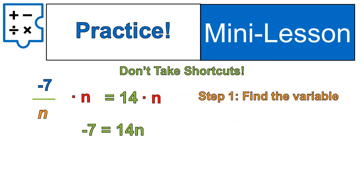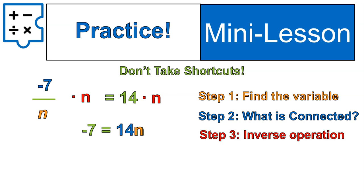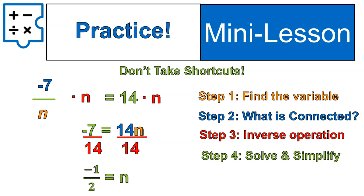I'm going to follow those steps again. Find my variable, n. What's it connected to? 14. I do the opposite of that. Now when you have a variable and a constant like this next to each other, a number and a letter, it means multiplication. So the inverse of that is division. I divide both sides by 14 and I end up with my final answer of negative 1 half. Negative 1 half is equal to n.